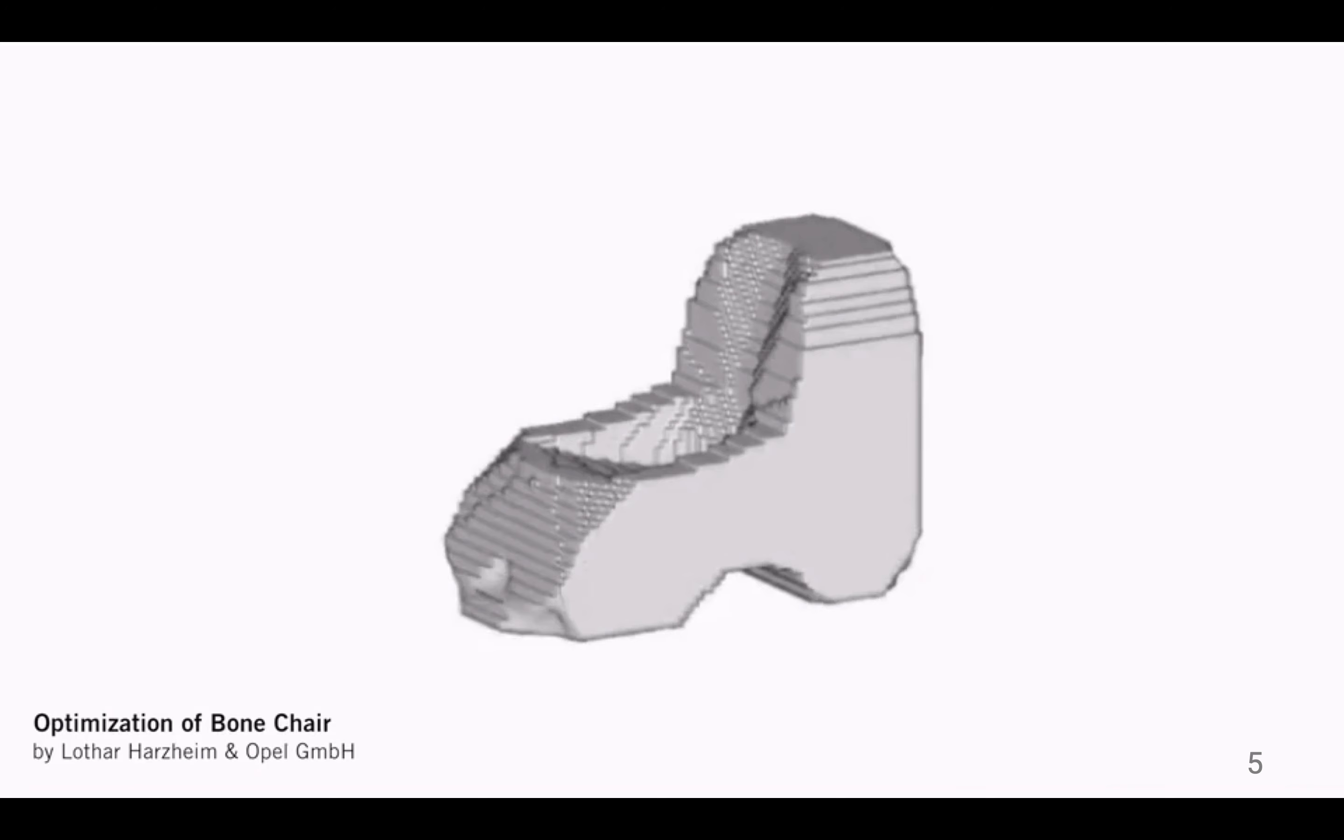It starts from this solid block. Here we could observe the seat and the back, and these two parts are not allowed to be changed during the optimization. And on the ground, there are three points fixed indicating where the legs will grow from.